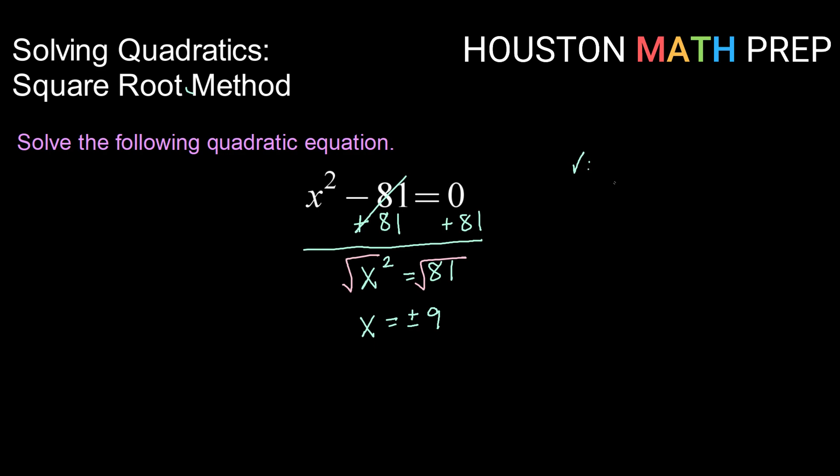If we go to check both of our answers, let's verify that both work. Checking positive 9, that would be positive 9 squared minus 81 equals 0. Positive 9 squared is 81, so we do in fact get a solution.